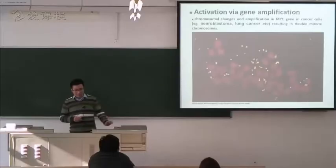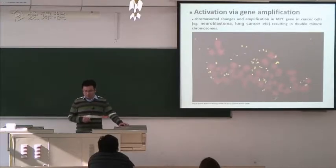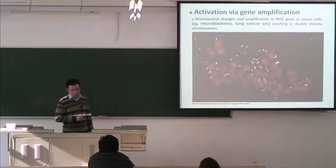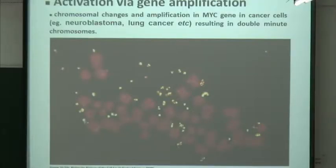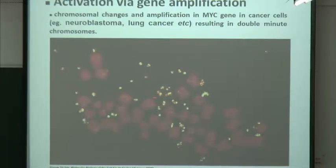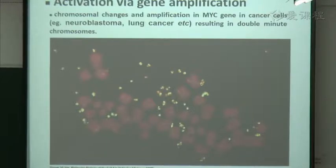The second example is activation of the proto-oncogene via gene amplification, involving the NMYC gene. Chromosomal changes and amplification of the NMYC gene occur in cancer cells such as neuroblastoma. This results in so-called double-minute chromosomes, shown here in yellow. Many copies of these miniature chromosomes are detected by DNA hybridization, meaning there are many more copies of the NMYC gene. That is how gene amplification leads to activation of the proto-oncogene.